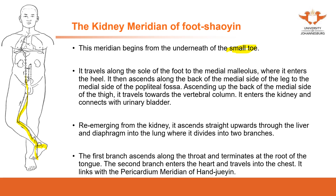The kidney meridian ascends up to the abdomen region, enters the abdomen, links to the kidney, and connects with the bladder. Re-emerging from the kidney, it ascends straight outwards through the liver and diaphragm into the lung, where it divides into two branches.